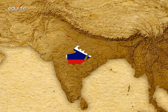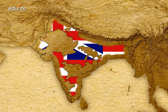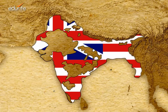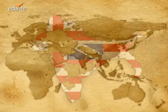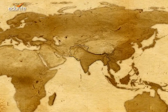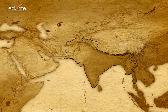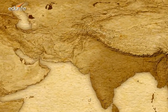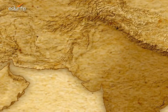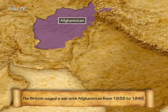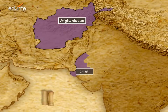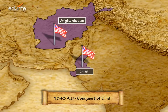By the later part of 1830, most Indian territories had come under British rule. Only a few pockets in mainland India and the regions of northwest India heavily influenced by the Russians continued to elude the British. To conquer these regions, the British waged a war with Afghanistan from 1838 to 1842. It then established its indirect rule in Afghanistan and conquered Sindh in 1843.